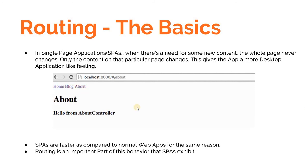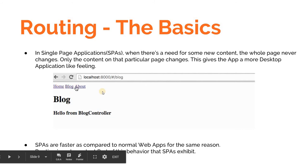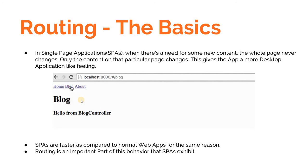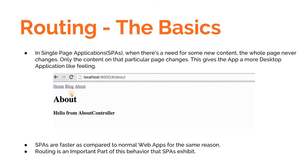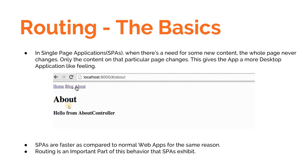For example, in this application we have three components: the Home component, the Blog component, and the About component. Whenever an empty route is reached, Angular navigates the user to the Home component. If the Blog route is reached, it loads the Blog component, and when the About route is reached, it loads the About component.